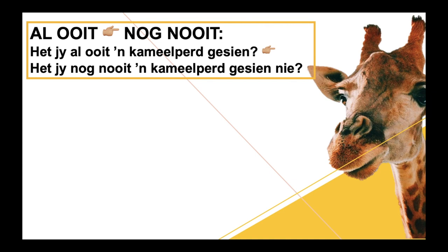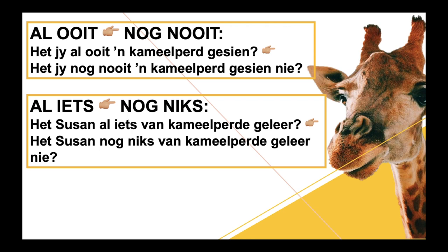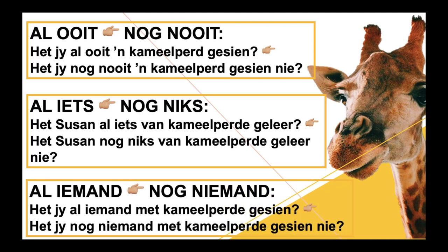And then 'al ooit' changes to 'nog nooit'. You will see this in sentences where 'al' is often in front of another negative word. So if you do get 'al' and 'ooit', you won't change 'al' to 'nog nie' and 'ooit' separately — these two actually go together. So you change 'al ooit' to 'nog nooit', and the 'nooit' sort of replaces the 'nie'. 'Het jy al ooit 'n kameelpaard gesien?' becomes 'Het jy nog nooit 'n kameelpaard gesien nie?' Similarly, 'al iets' becomes 'nog niks': 'Het Susanne al iets van kameelpaarde geleer?' becomes 'Het Susanne nog niks van kameelpaarde geleer nie?' And 'al iemand' becomes 'nog niemand': 'Het jy al iemand met kameelpaarde gesien?' becomes 'Het jy nog niemand met kameelpaarde gesien nie?'